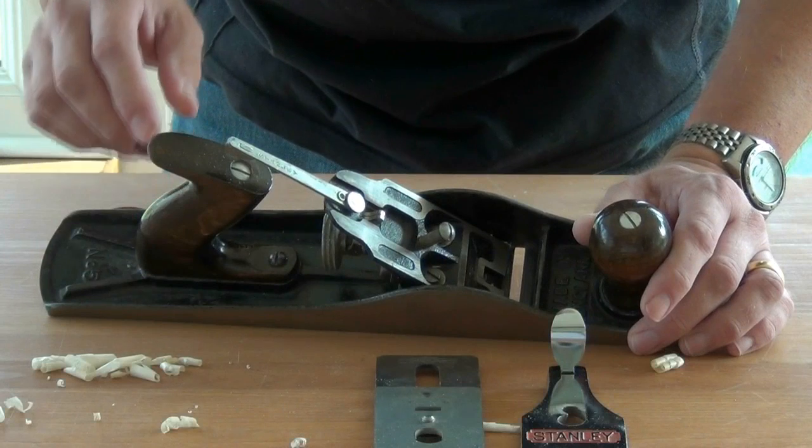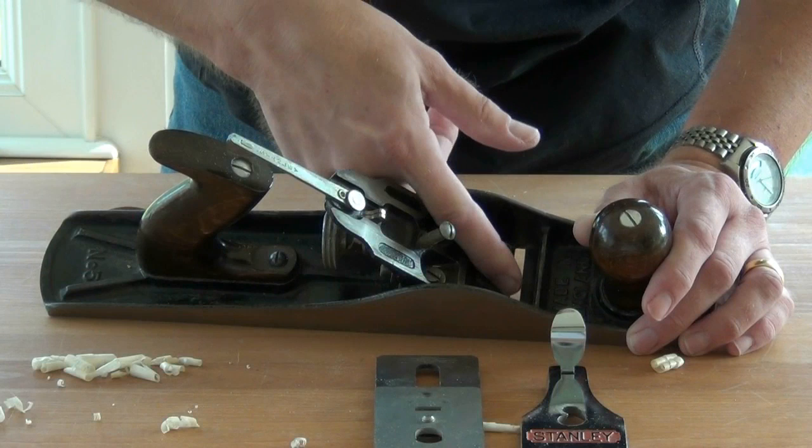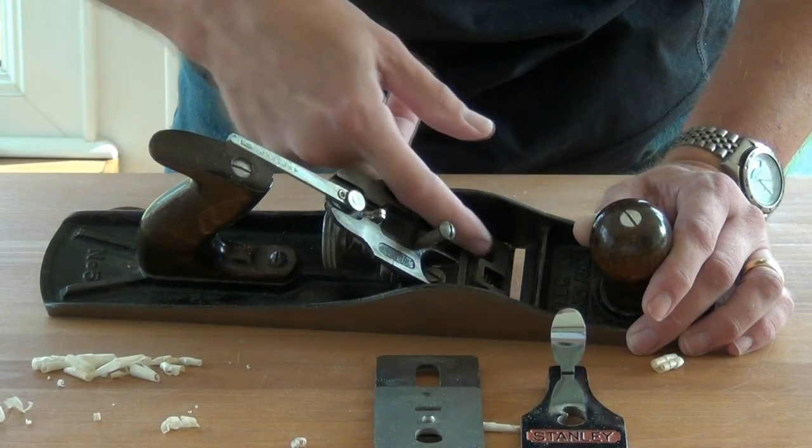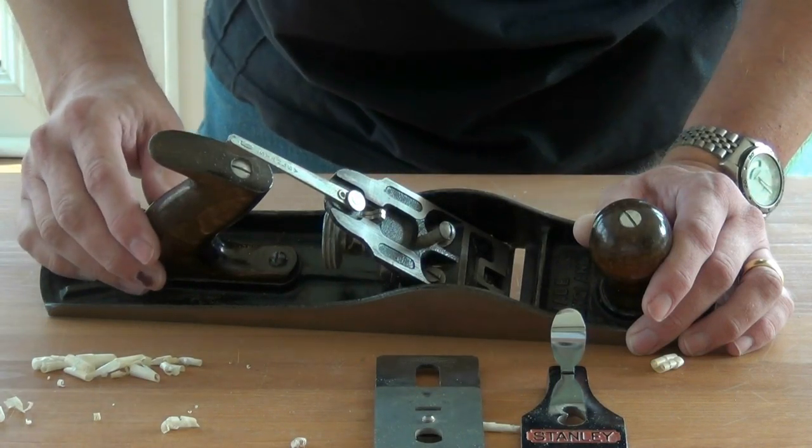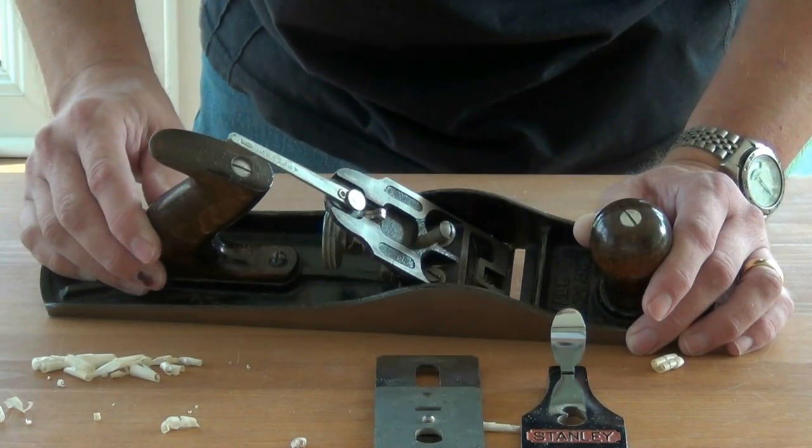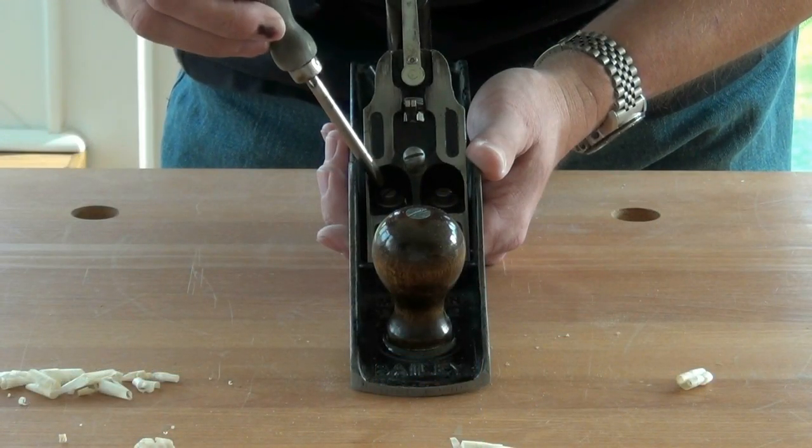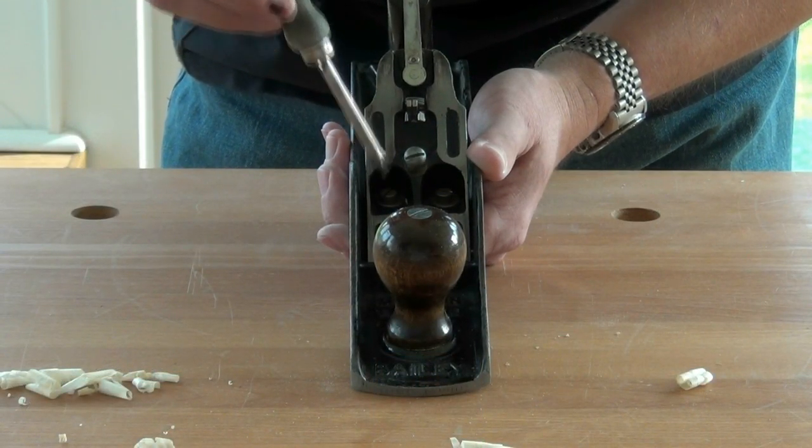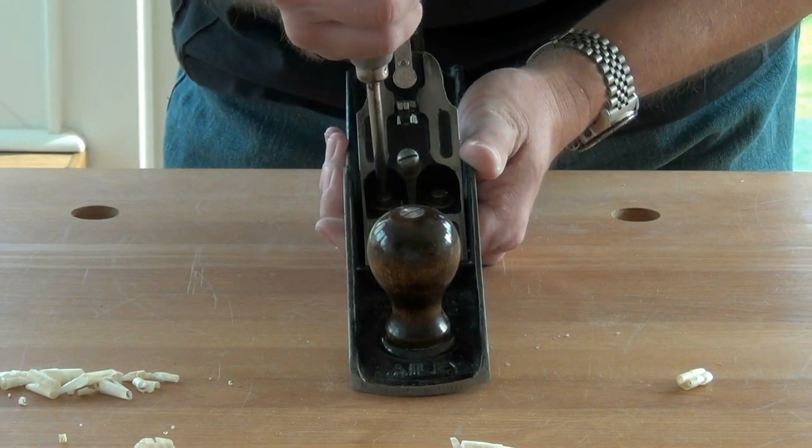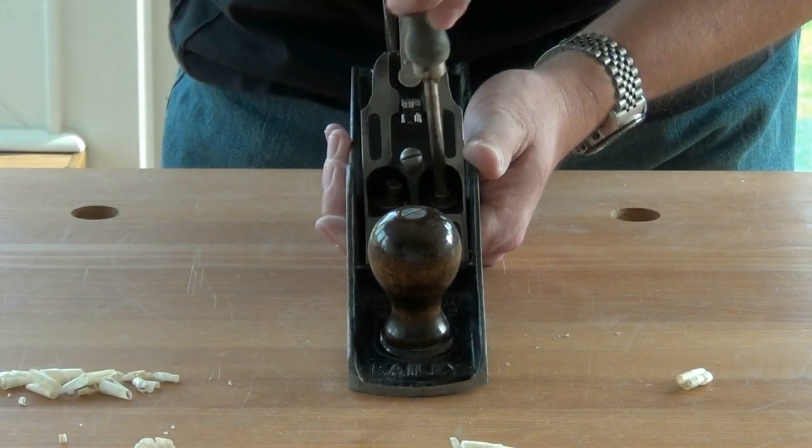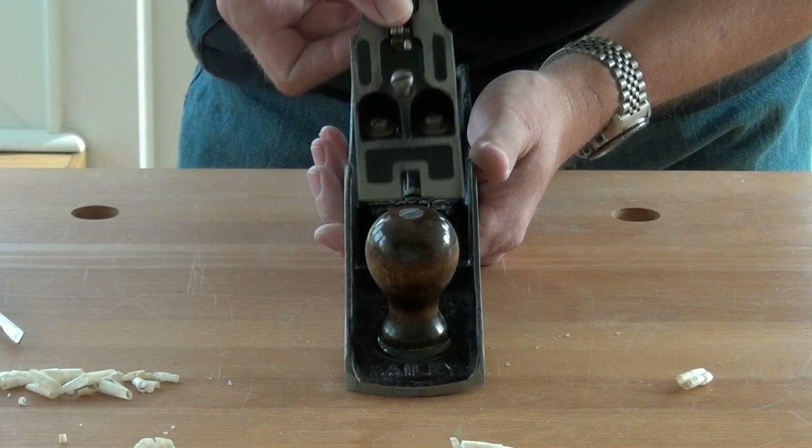It's now a lot clearer to see the frog, which is basically a sloped ramp down which the blade is either advanced or retracted to get the shaving of the thickness that we require. We can remove the frog by releasing the two machine screws which have been revealed having removed the blade. It just lifts out like so.